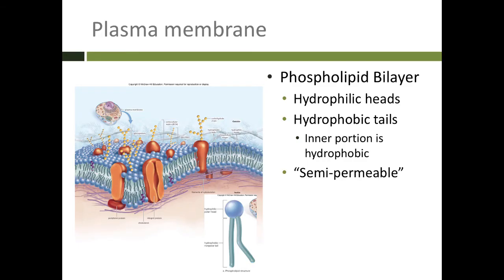Remember that the plasma membrane is made out of primarily phospholipids. You can see here that we have a picture of a phospholipid, and it has two portions to it. One is called the head — the round part that contains the phosphate, and it is charged, polar, and hydrophilic, meaning it likes water. And it's got these two fatty acid tails that hang down, and those are hydrophobic — they do not like water, they're uncharged. Because they don't like water, they try to hide in an aqueous environment such as the body.